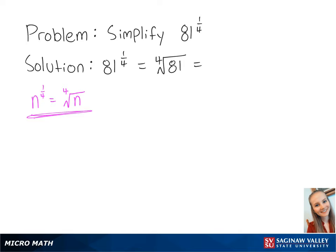This is equal to the 4th root of 3 times 3 times 3 times 3, which is equal to 3. This is the final answer.